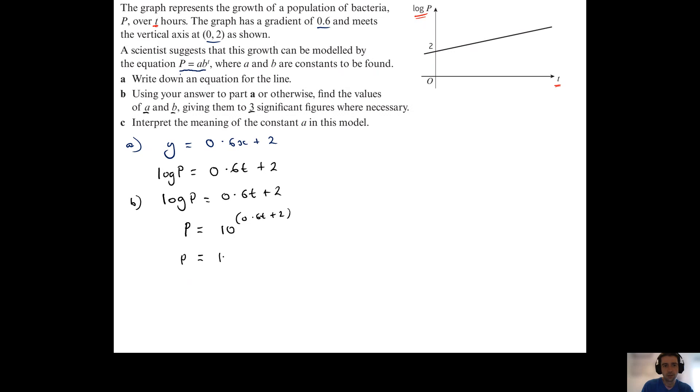So I can write this now as two separate parts: 10 to the power of 0.6t multiplied by 10 to the power of 2.